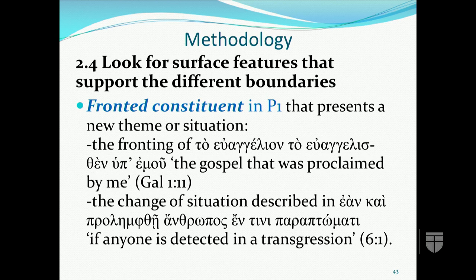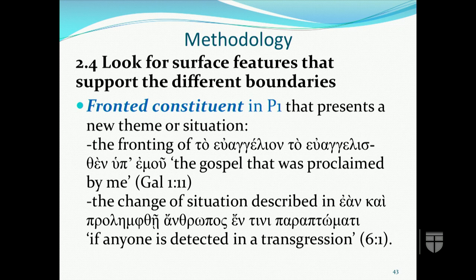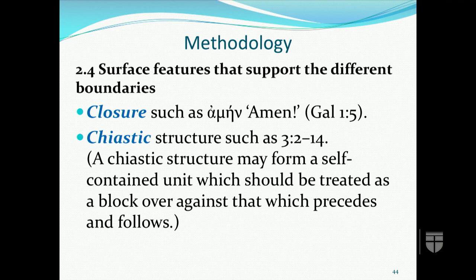Step four: look at surface features that support the different boundaries. Surface features that can be cited as supporting evidence for boundaries proposed on thematic grounds include: a fronted constituent (P1) that presents a new theme or situation — for example, the fronting of 'to evangelion' in Galatians 1:11; a change of situation described at the beginning of 6:1 with the conditional 'ean' clause; closure markers such as 'amen' in verse 1:5; and chiastic structure in chapter 3 verses 2-14 that functions as an embedded unit marked by resumption.